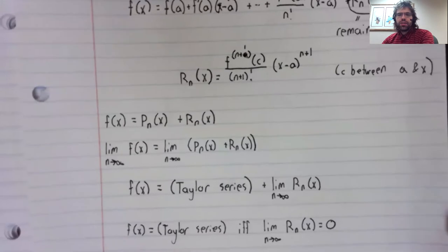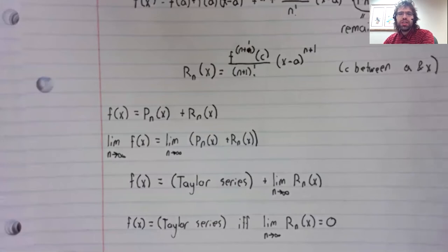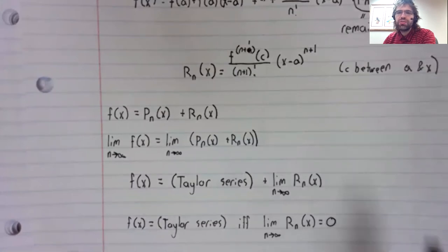And that is exactly what we needed for the function to equal its Taylor series, its Maclaurin series. In this case, all we need is for the limit of the remainder to be zero. Just what we found.